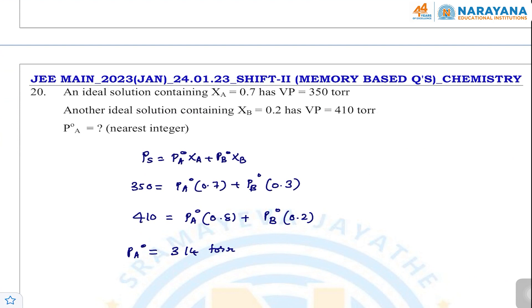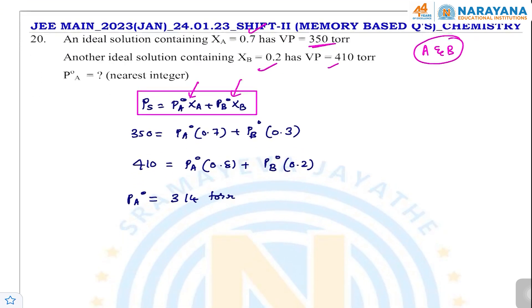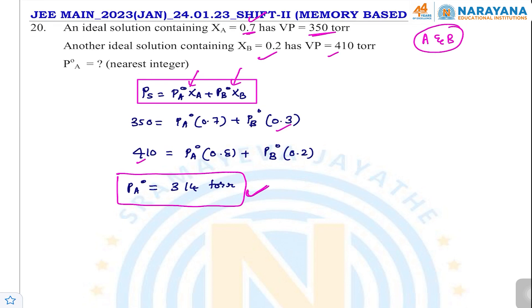The next question: an ideal solution containing A and B. Mole fraction of A = 0.7, vapor pressure of A = 350 torr; mole fraction of B = 0.2 (so XB = 0.3... wait, XB = 0.2 with vapor pressure 410 torr... correction: XA = 0.7, XB = 0.3 but vapor data XB fraction given 0.2 with 410). Applying Raoult's law: P_total = PA⁰·XA + PB⁰·XB. Substituting the given values — 350 × 0.7 and 410 × 0.2 — and solving, PA⁰ comes out to be approximately 314 torr.